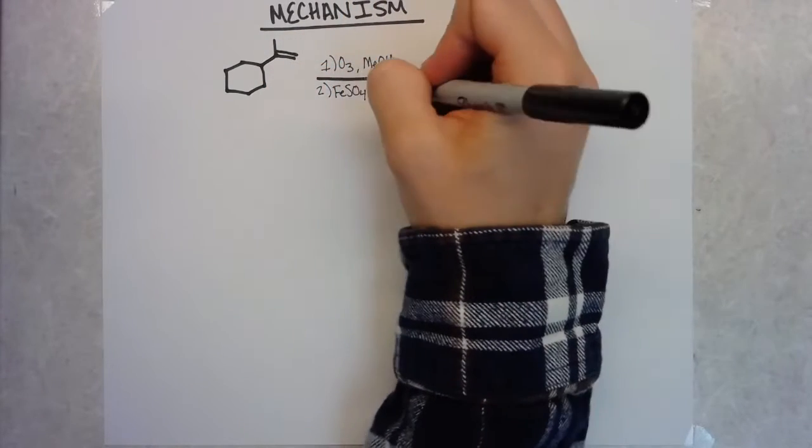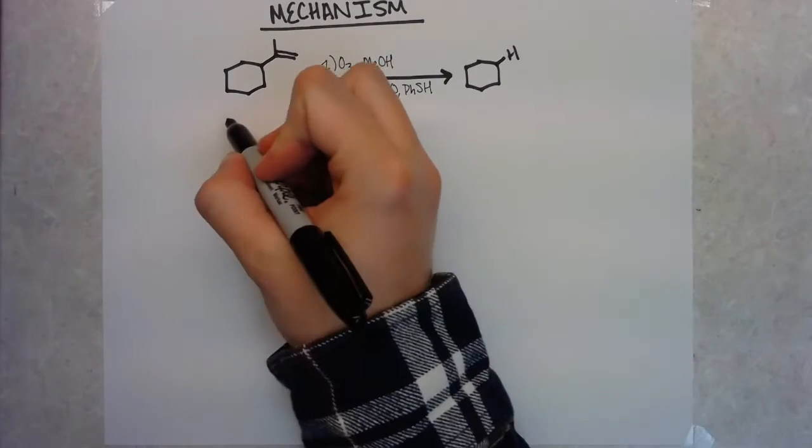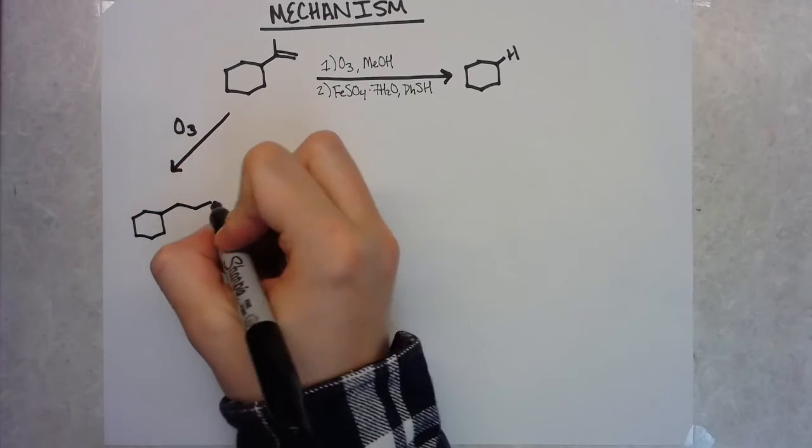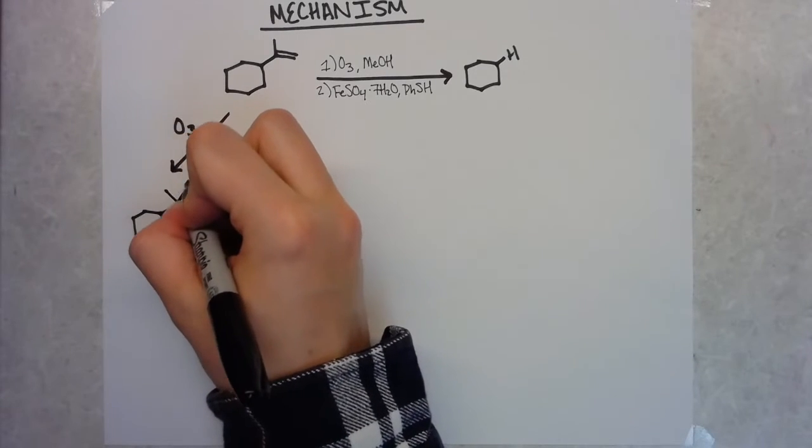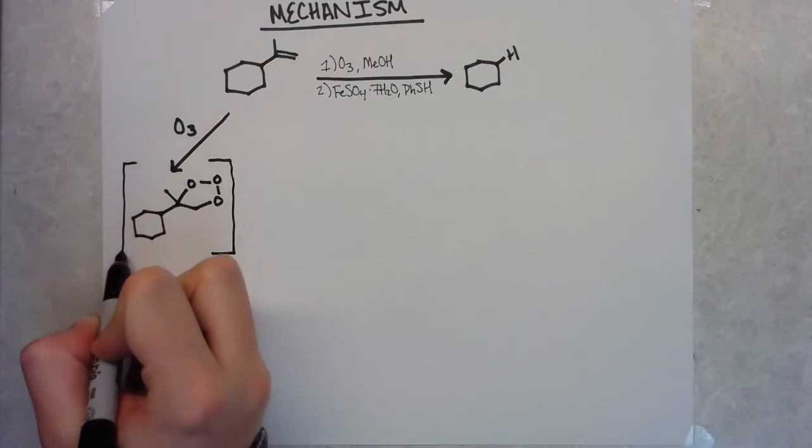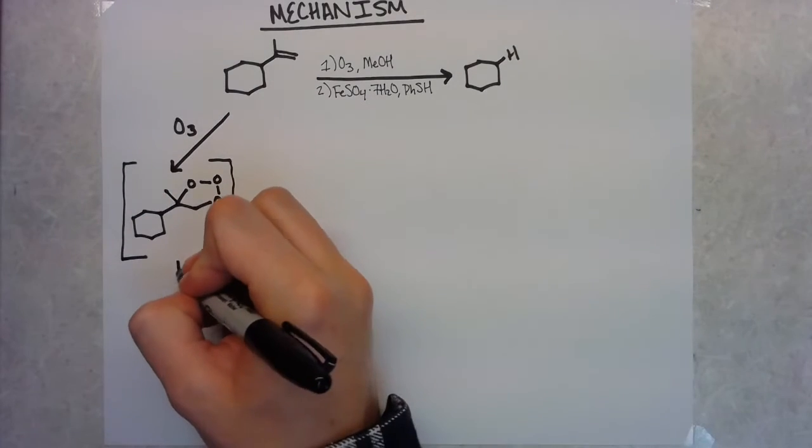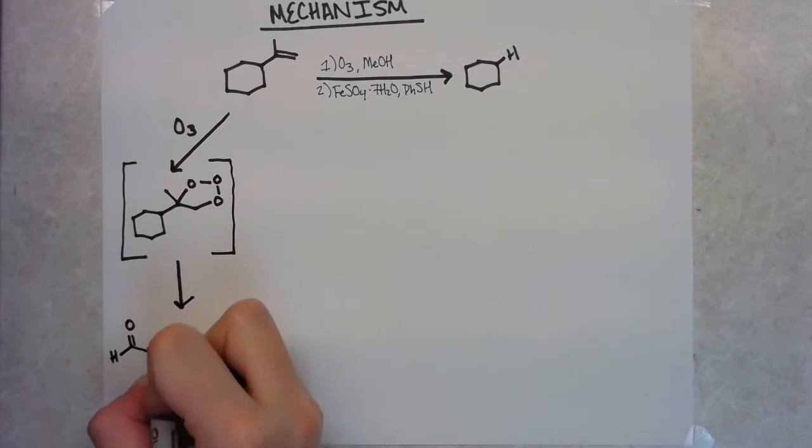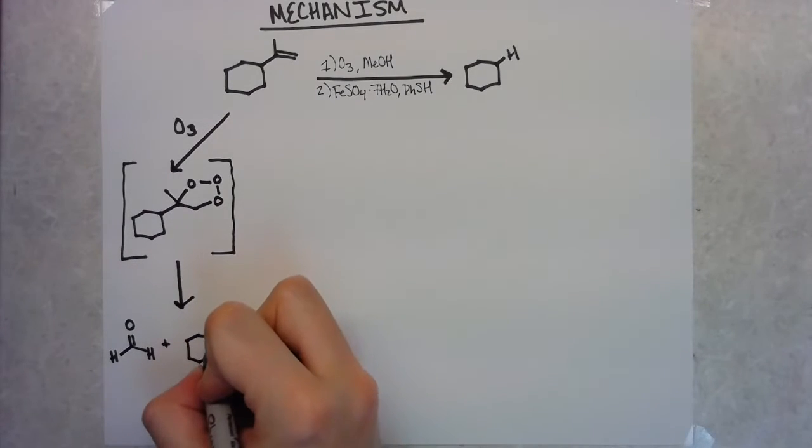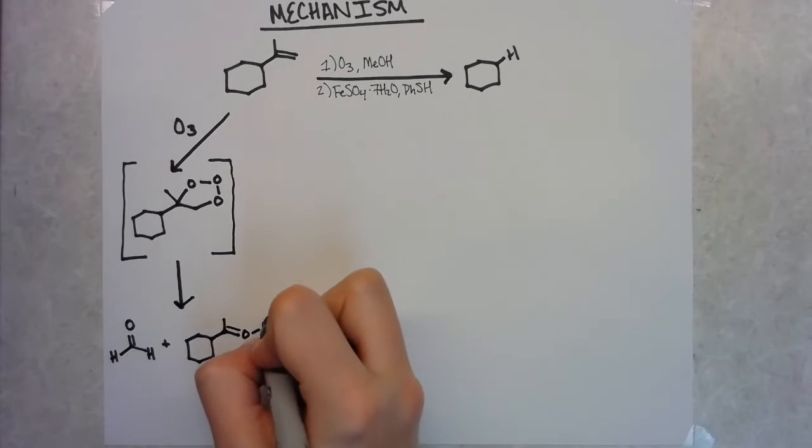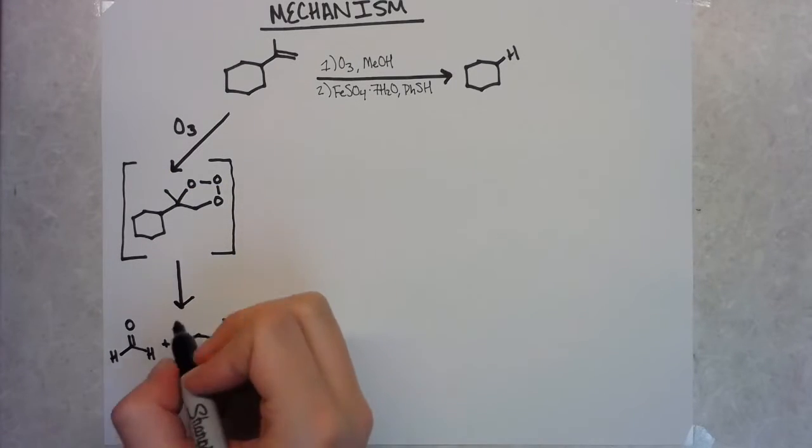So basically the first step here is ozonolysis. Start with an alkene and ozone that undergoes a 1,3 cycloaddition to give a five membered intermediate ring. And then there's a retro 1,3 cycloaddition to give two different fragments, one being a carbonyl, the other being a carbonyl oxide. In the ozonolysis mechanism that most people are familiar with, this goes on to form two different carbonyl containing compounds.